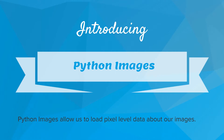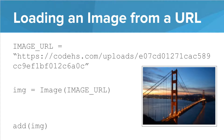Introducing Python images. Using Python images, we can load pixel-level data for our images, and with that pixel data we can then manipulate the images. We briefly saw Python images a few modules back when we were looking at Python vs. Carol, but we'll take a deeper dive into them in this lesson. With the image command, we can assign a picture using the image URL, then add it to our canvas using the add command, similar to how we would add shapes.